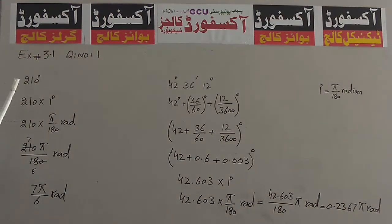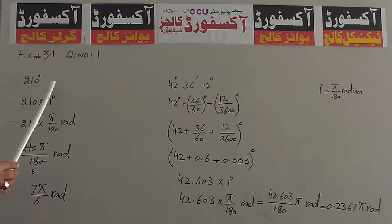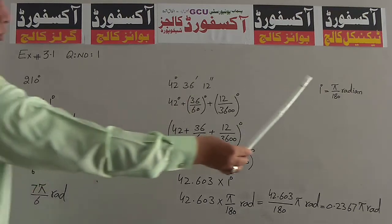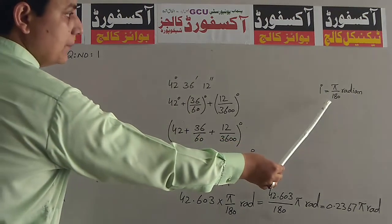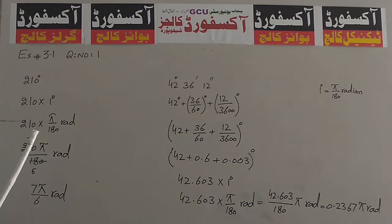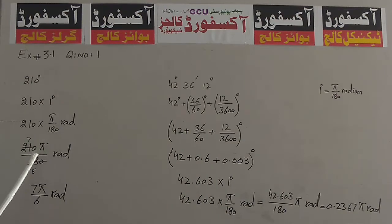हम क्या करेंगे? पहला particle है 210 degree. 210 को लेकर multiplication करेंगे, 1 degree की जगह formula Pi over 180 Radian दर्ज कर दिया है. तो 210 × Pi / 180 Radian आएगा.